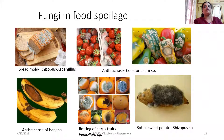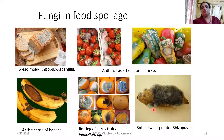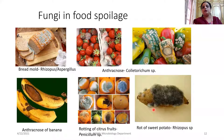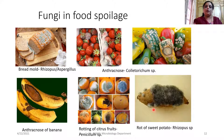We have also studied the rotting of citrus fruits, which is caused by Penicillium species. Many vegetables which are rich in starch also get rot due to infection when storage is not proper — they get infected with Rhizopus species.